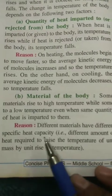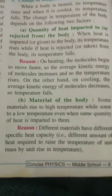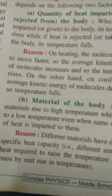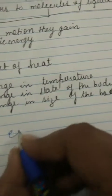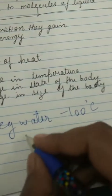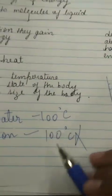Different materials have different specific heat capacity — that is, a different amount of heat required to raise the temperature of a unit mass. For example, water boils at 100 degrees Celsius, but iron will not boil at 100 degrees Celsius because it needs much more energy to boil. The heat energy required for iron is much larger than that of water.